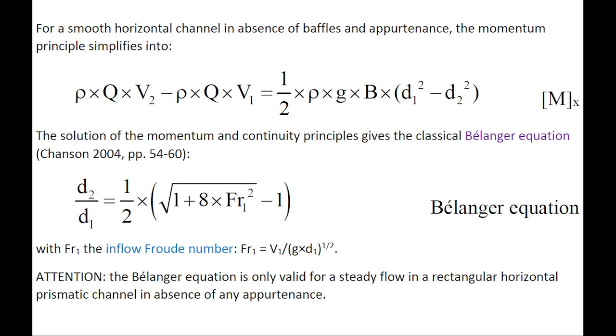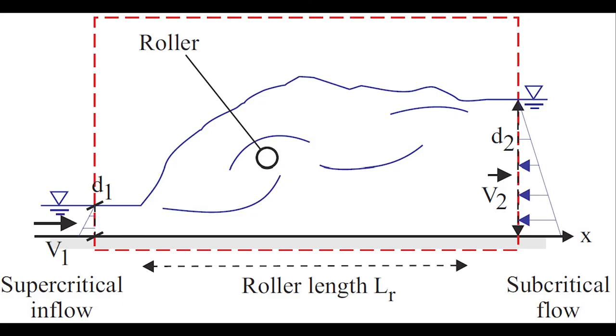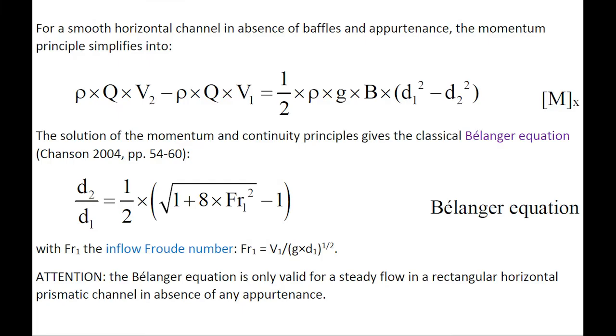For a smooth horizontal channel, in absence of obstructions, the momentum principle may be simplified as such here, with a solution called the Bélanger equation, in which the Froude number FR1 is the inflow Froude number.